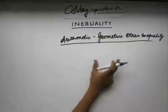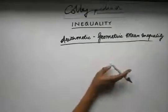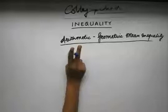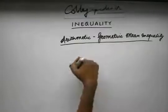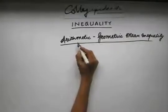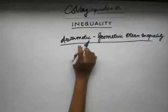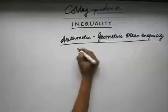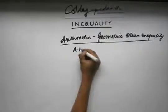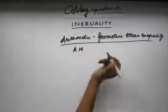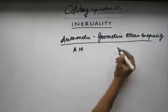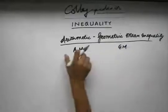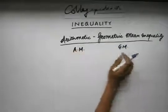The Arithmetic Geometric Mean Inequality — before we start with this inequality, we must know what an Arithmetic Mean is and what a Geometric Mean is. Arithmetic Mean is also denoted by AM. Geometric Mean is also denoted by GM. Let's understand what these two are.